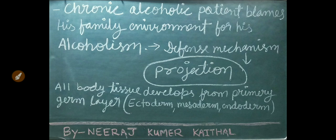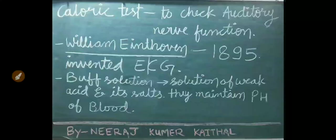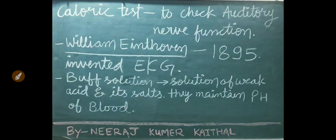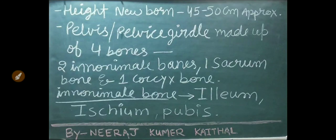All body tissues develop from primary germ layers: ectoderm, mesoderm, and endoderm. The caloric test is used to check auditory nerve function. William Einthoven in 1895 invented the ECG. A buffer solution is a solution of a weak acid and its salts; they maintain the pH of blood.